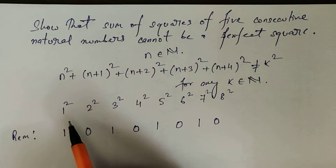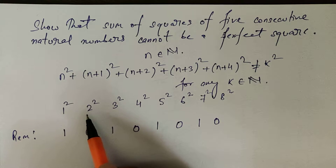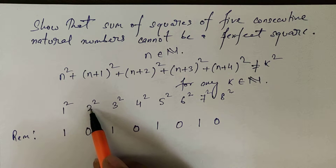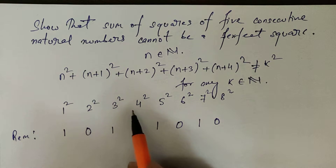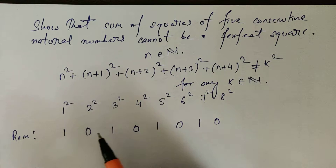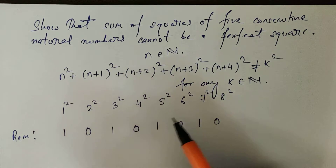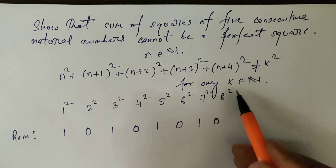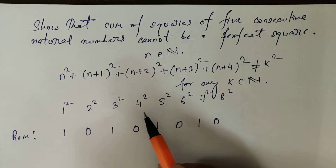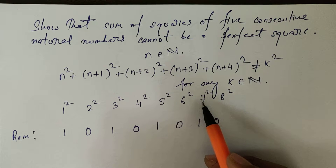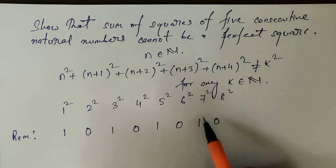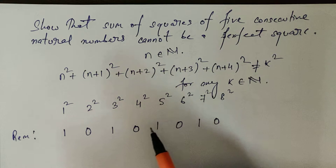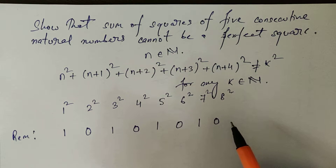There is a clear pattern: when the number is of the form even² the remainder is 0 — 2², 4², 6², 8² all give remainder 0. And when the perfect square is of the form odd² then the remainder is 1. We can observe this pattern but we will give a formal proof for it.